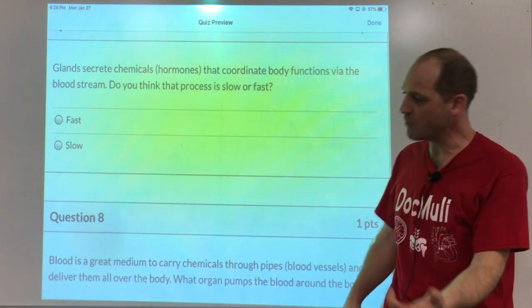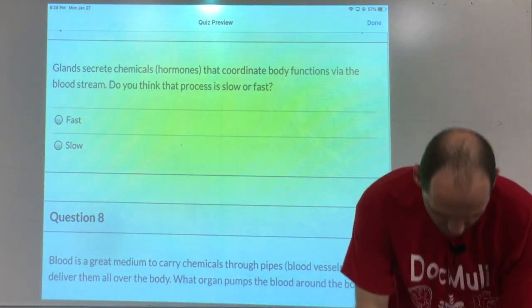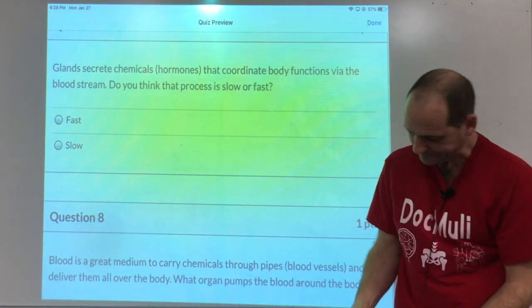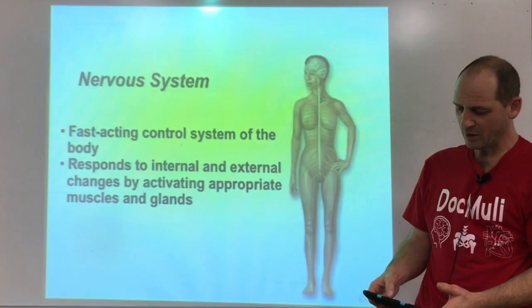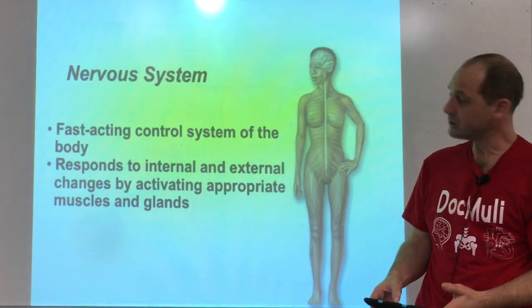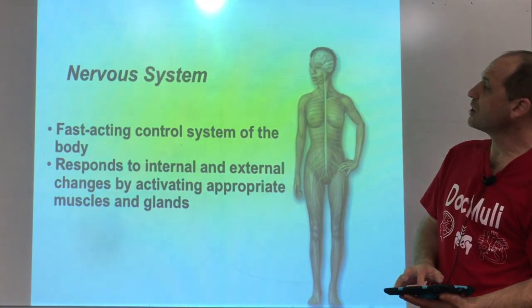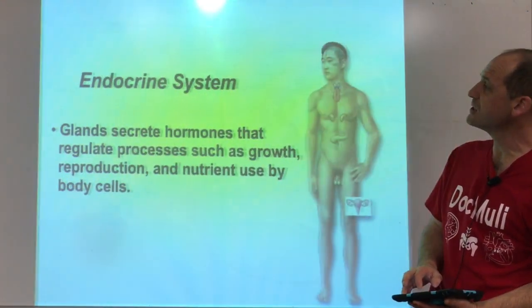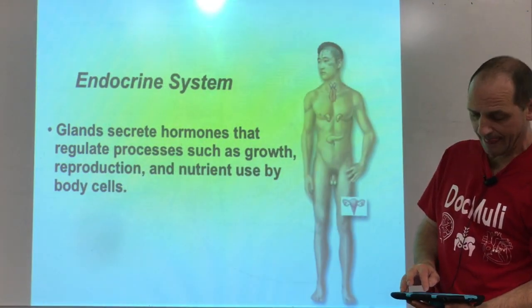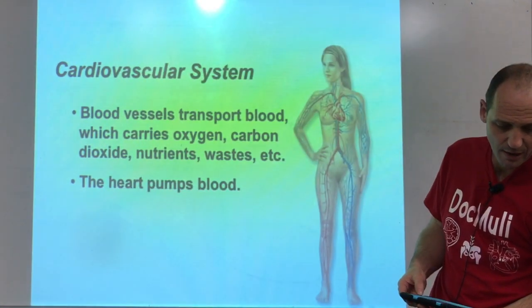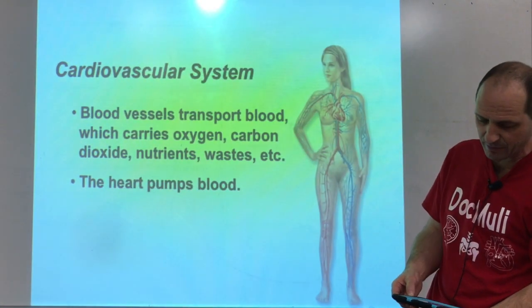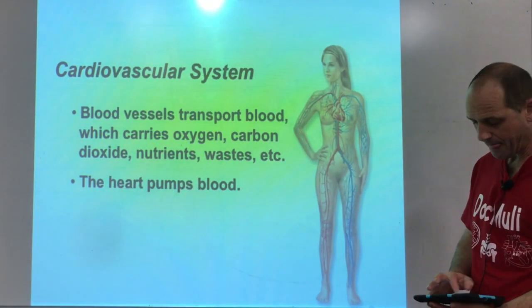Those are the two systems — nervous and endocrine. The next system we're going to talk about is the cardiovascular system.